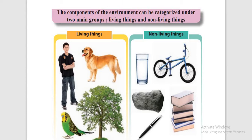But water, a cycle, stone, books and pens cannot eat, move or grow. And they cannot move themselves. The cycle can move, but it cannot move by itself — we need to apply a force to make it move.